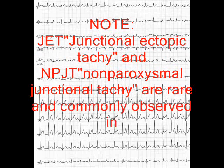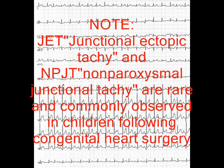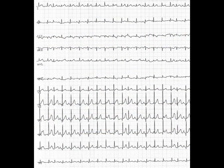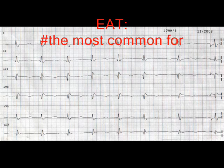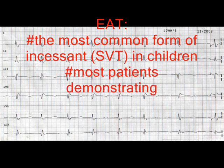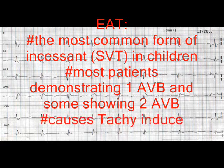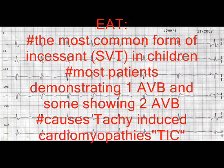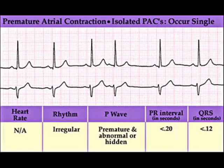JET and NBJT are rare but common in children following congenital heart disease. EAT is the most common form of incessant SVT in children, and most patients develop first and second degree AV block. This is called tachycardia-induced cardiomyopathy, or TAC.